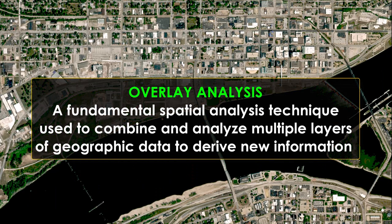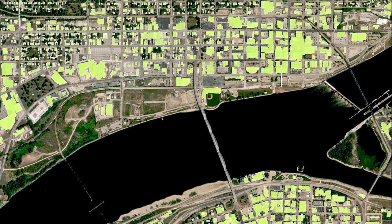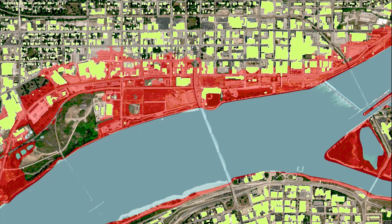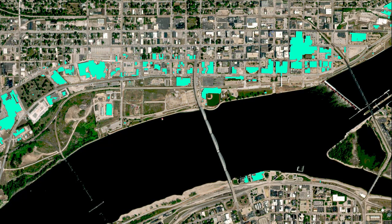Overlay analysis is another fundamental spatial analysis technique. In it, we combine and analyze multiple layers of geographic data to derive new information. For example, take this image, which shows a portion of the city of Davenport, Iowa, along the Mississippi River. As a planner in Davenport, you might be interested in understanding if there are buildings susceptible to river flooding. Through overlay analysis, we can identify those buildings that could be affected by flooding, and here we see an output layer which is just those buildings.